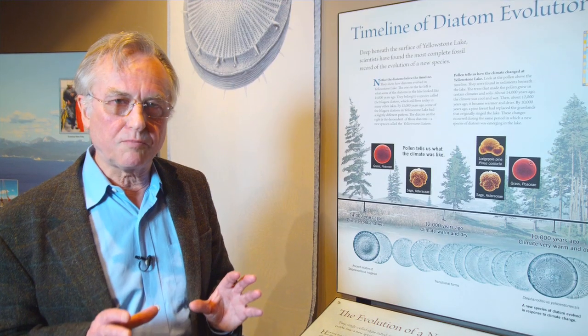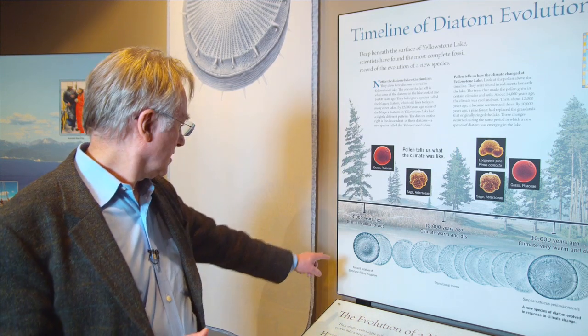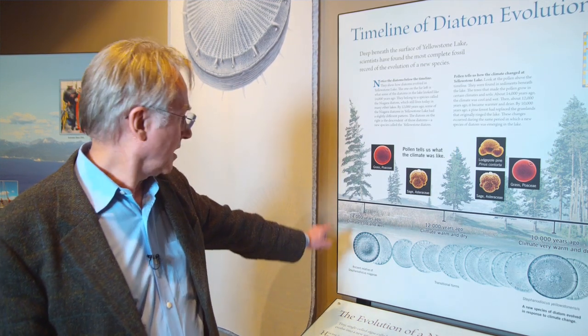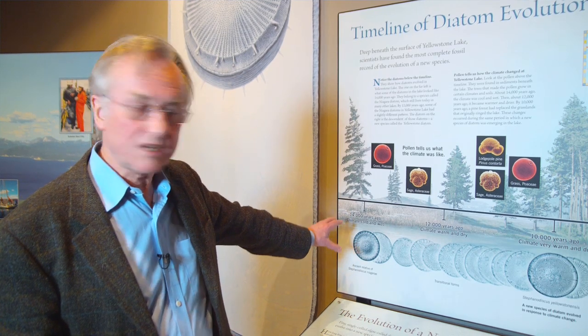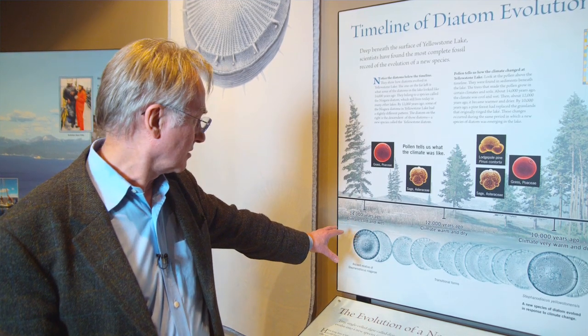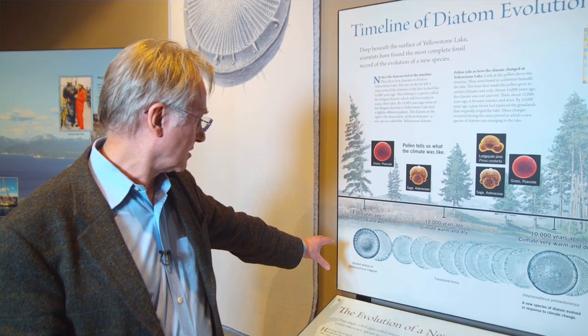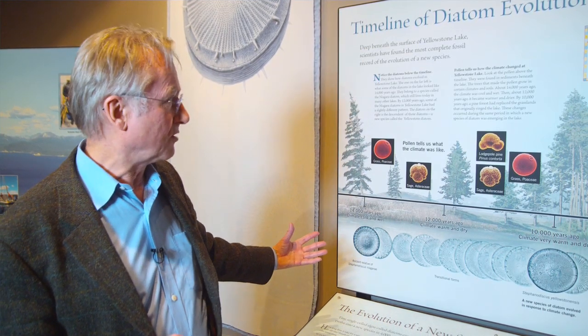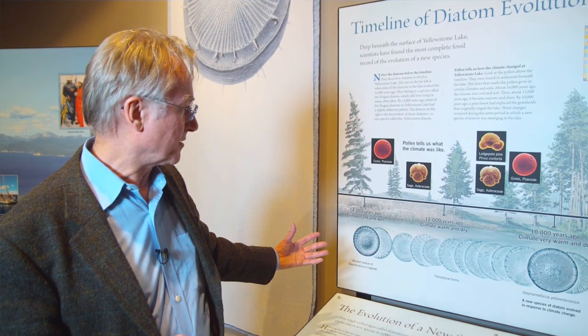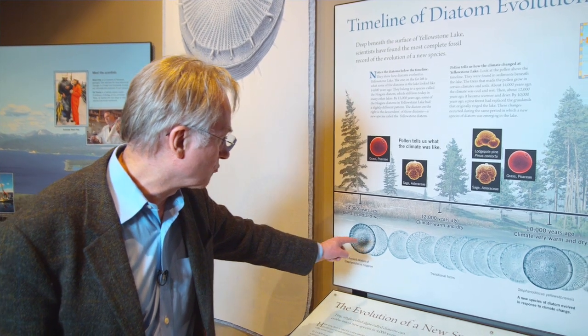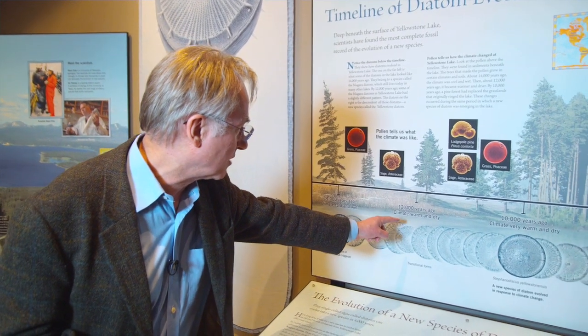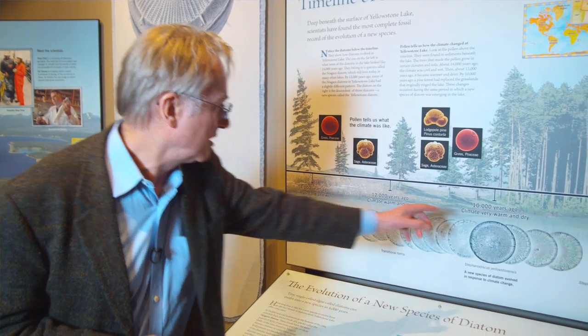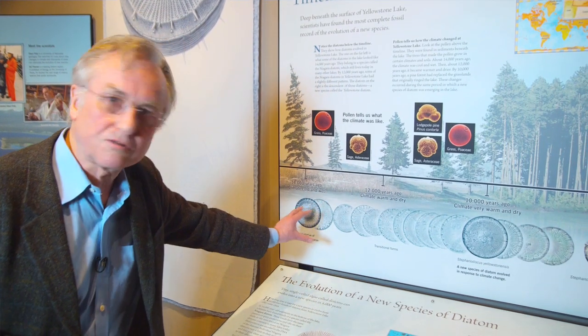If you take a core sample from the mud below Yellowstone Lake, you'll find Stephanodiscus niagara at 14,000 years old. About 14,000 years ago, the climate was cold and wet, and the diatoms were just the same as the diatoms in the rest of the country. But as you look in more and more recent core samples — 12,000 years, 10,000 years — you get a gradual change.